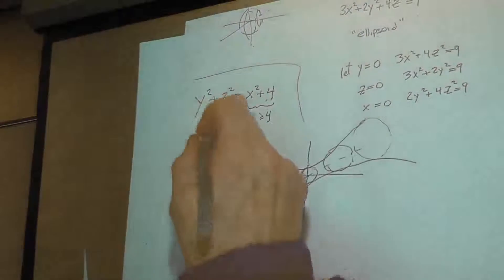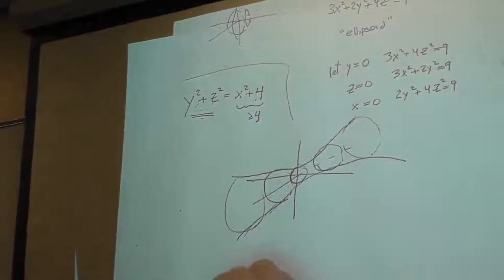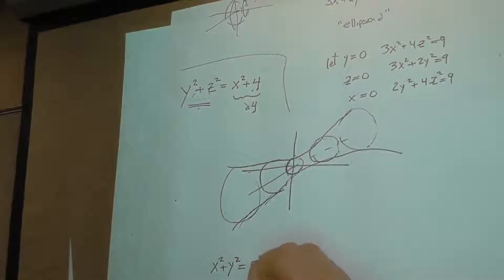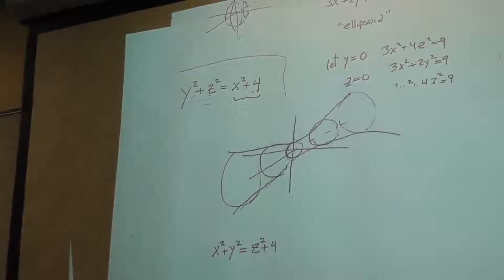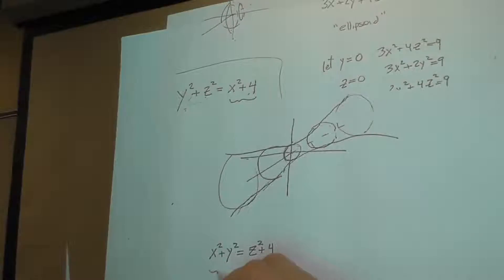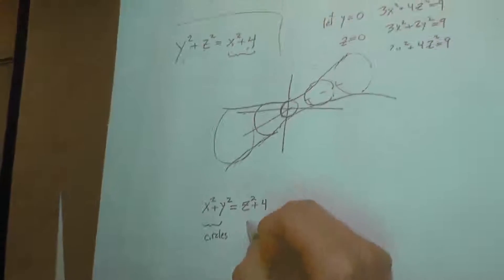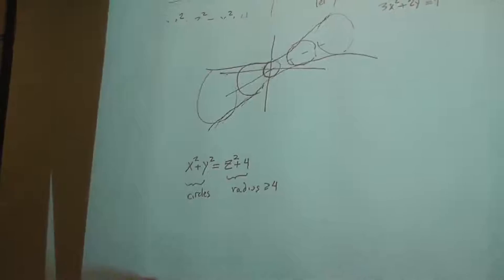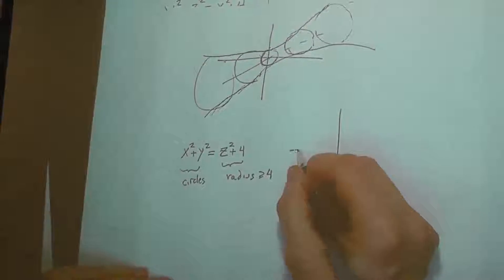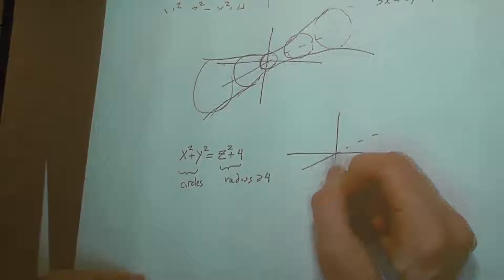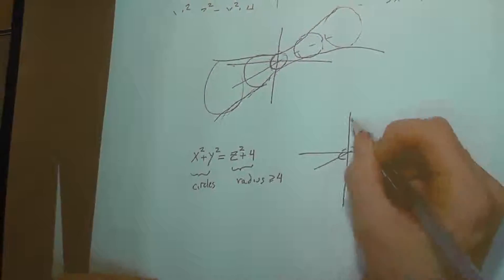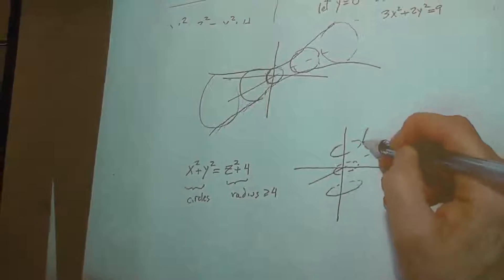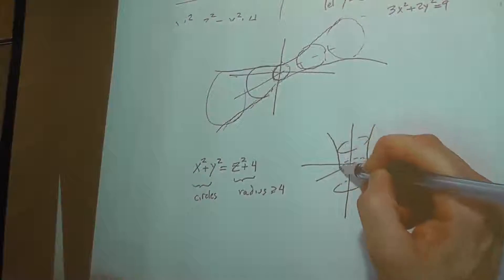If instead of this, if I looked at x squared plus y squared equals z squared plus four, then I would be looking here at circles and their radius greater than or equal to four, depending on the value of z. You give me different values of z, I give you bigger and bigger circles, and I get this kind of shape.